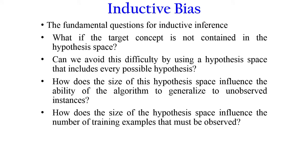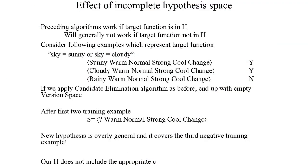Key questions for inductive inference include: What if the target concept is not in the hypothesis space at all? Can we avoid this by using a hypothesis space including every possible hypothesis? How does the size of the hypothesis space influence the ability to generalize to unobserved instances, and how does it influence the number of training examples needed?